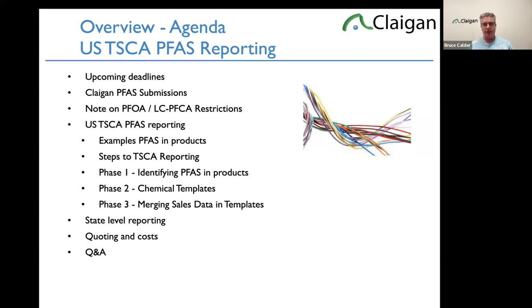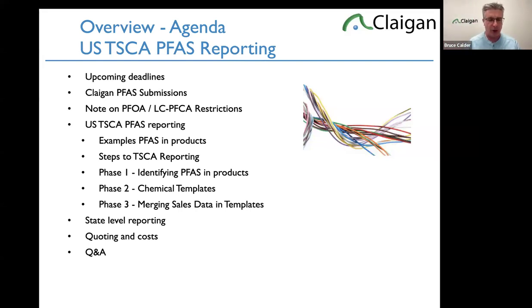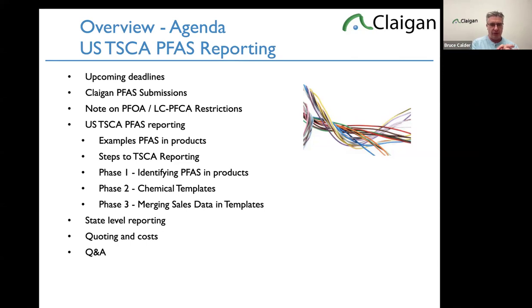I'm going to talk about the steps to TOSCA PFAS reporting — how we do it process-wise, and about CDX, the reporting system and the fields, so you get an idea. Here are your products, here are the TOSCA fields. And then I'm going to talk about the three major steps to get from your products to these fields in the US TOSCA system in CDX. I'm going to talk about phase one: identifying PFAS in your products. Because what we focus on initially, almost in everything we work on, is what the output is.